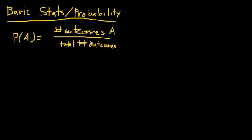divided by the total number of outcomes. For a basic example, I'll talk about rolling a die. What if I'm trying to find the probability of rolling an odd number? I can see that there's three possible outcomes where that happens, either rolling a 1, 3, or a 5.